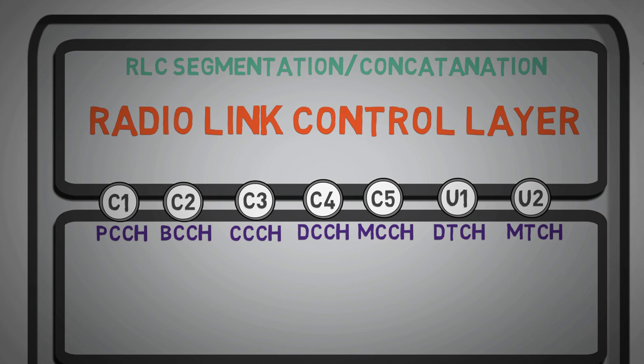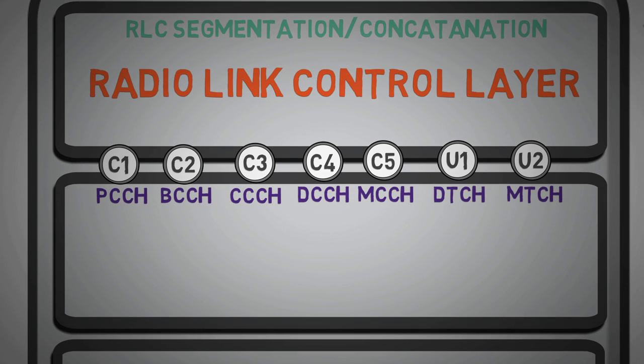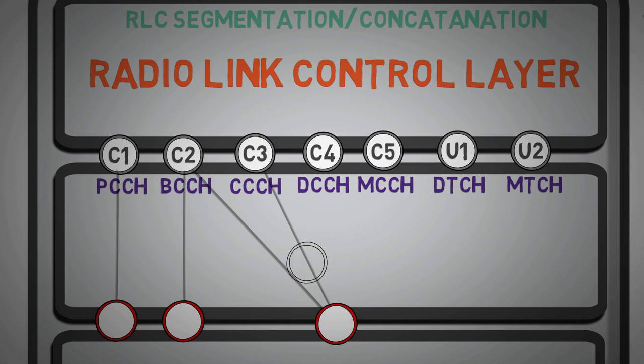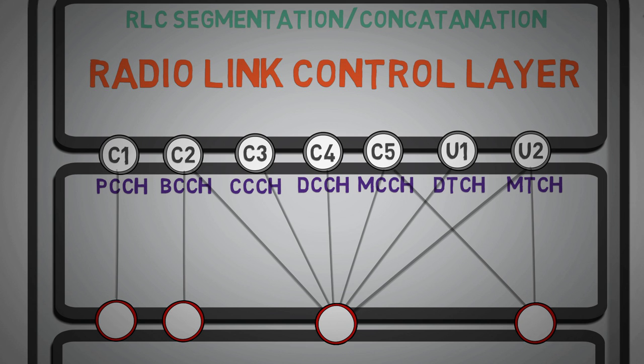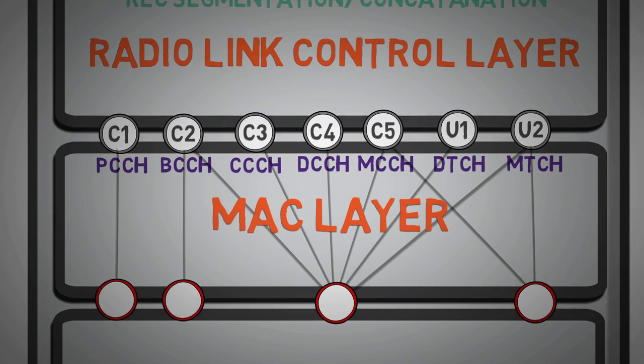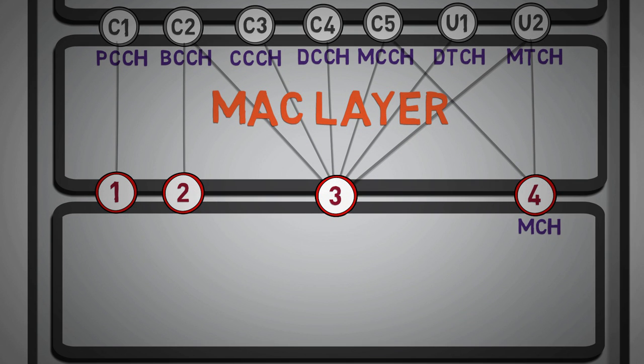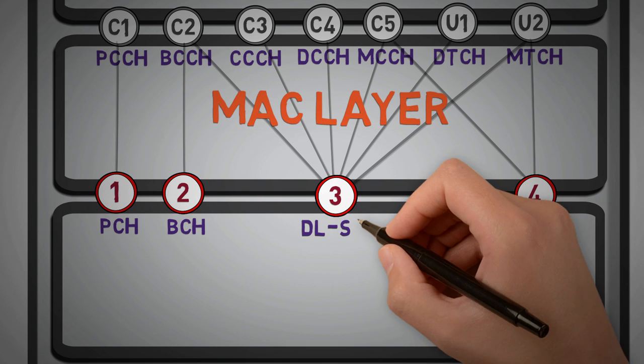After segregation, we need to think of transportation for every logical channel. This is similar to assigning of transport vehicle in our example, which was performed by team Y. Here this task is performed by MAC Layer. In downlink, 4 type of transport channels are used, from which the paging, broadcast channel are mapped one to one from respective logical channels.